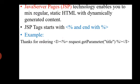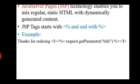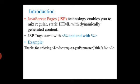For example, 'Thanks for ordering' is a label displayed in italic, and within the JSP tag we use the expression equal to request.getParameter("title"). Here, request is a predefined variable of JSP, and getParameter reads the parameter coming from the page. The value will be displayed as 'Thanks for ordering ice cream' or 'Thanks for ordering tea' — whatever the value is.